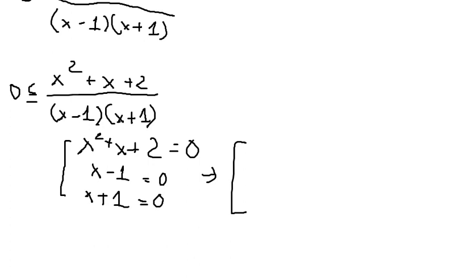For this one we don't have a solution in the numerator. For the denominator, we have s equals one and s equals negative one. Now we need to draw the sign table.